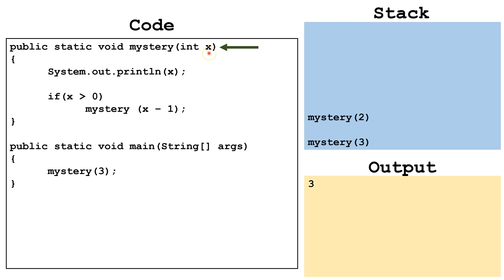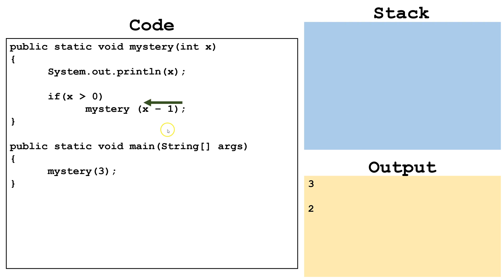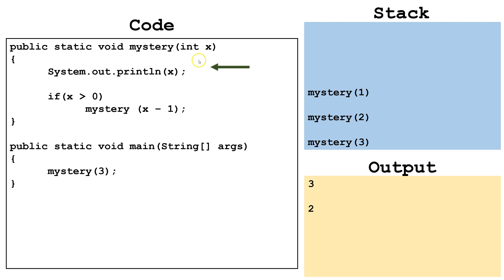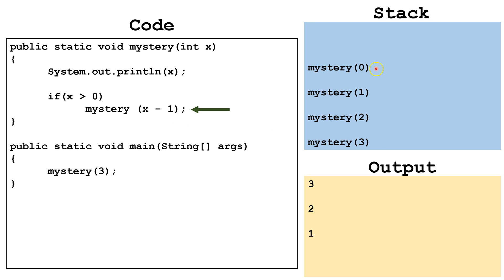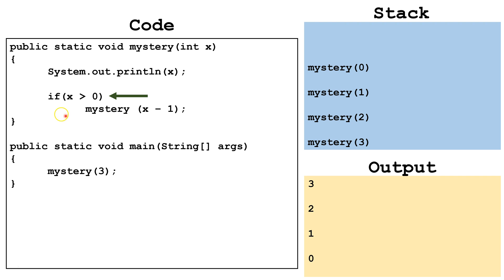We pass the 2 to x and print out the x value, which outputs 2 to the console. We check: is x greater than 0? It is. So we call mystery(x minus 1), which is mystery(1), and put it on top of the stack. The 1 goes into the parameter. We print off the value x, which is 1, and it goes to the console. Then we check: is x greater than 0? It is. So we make a call to mystery(0) and put it at the top of the stack. The value of x is 0, so we print off x, which is 0. That goes to the console. We check: is x greater than 0? It is not. So we do not execute the recursive call.